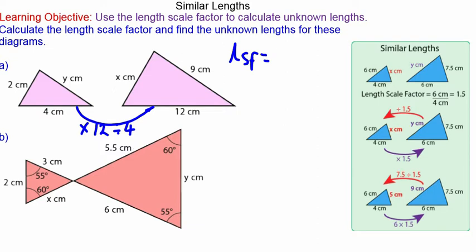So the length scale factor is 12 centimeters divided by 4 centimeters, which equals 3. This means the big pink triangle is 3 times bigger than the small pink triangle.